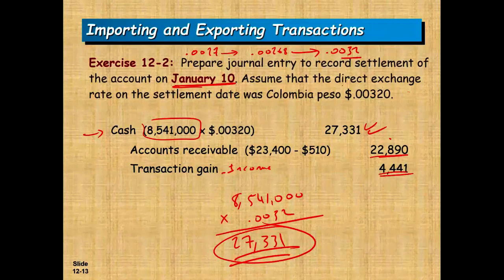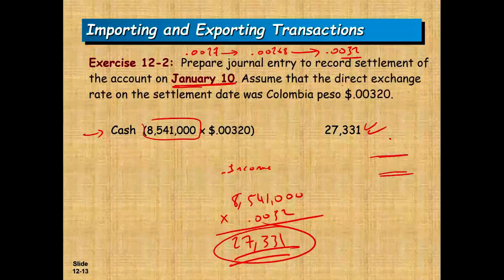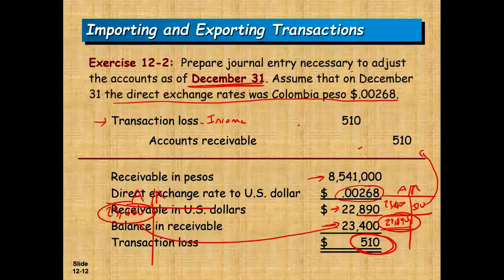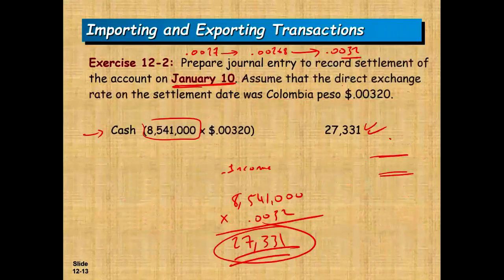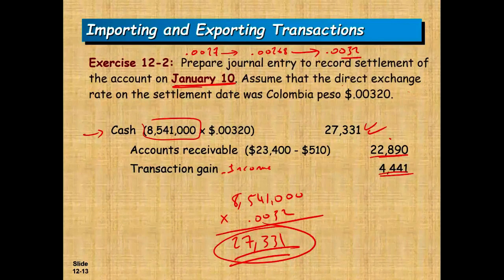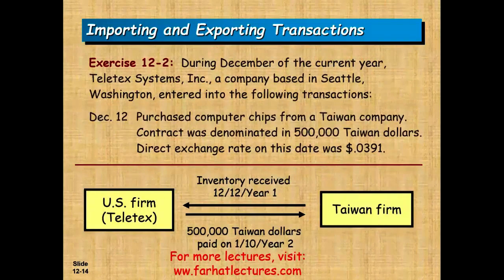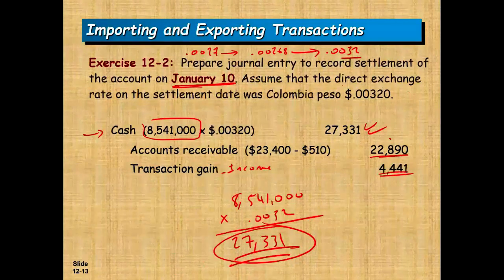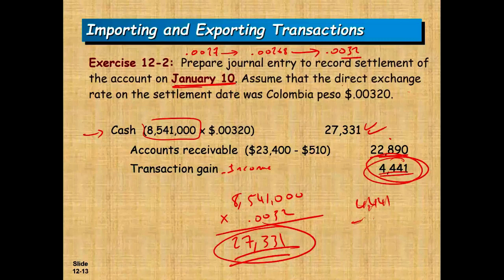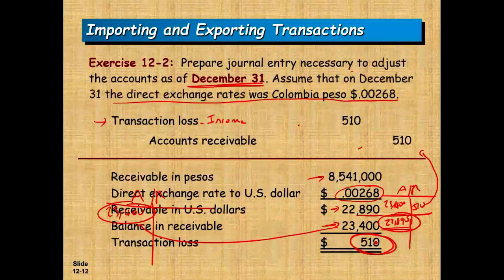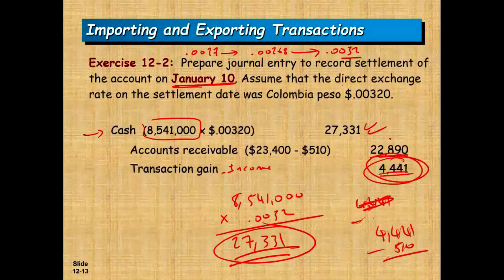Notice: because you had a receivable, you wanted the U.S. dollar to weaken. First it strengthened at December 31st and you had a loss of $510. Then by January 10th the U.S. dollar weakened, which was good — the pesos went up and you had a large gain of $4,441. The net gain on the transaction is $4,441 minus $510, giving you the overall net gain.